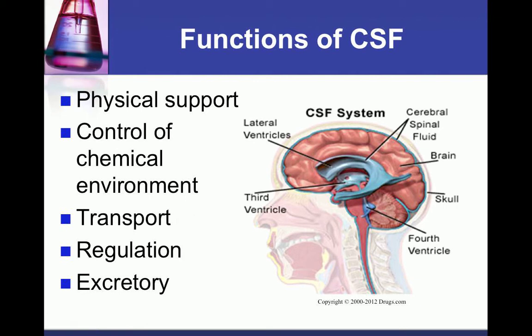Choroidal cells have large Golgi apparatuses. With regulation, CSF is involved in maintaining blood and intracranial pressure. As we've talked about with the brain-in-a-box concept, if ICP rises or if there is increased blood flow, the choroid plexus will produce less CSF to maintain the homeostatic state. Finally, CSF provides a path for excretion of metabolic waste and neurotransmitters via the arachnoid villi at the top of the brain, and also possibly through the lymphatic system.